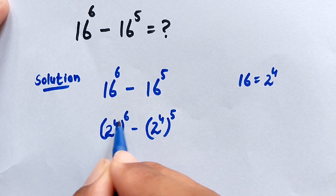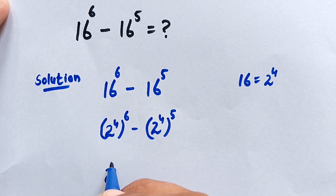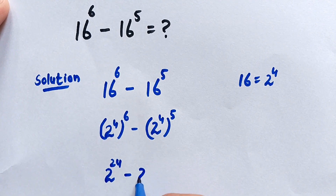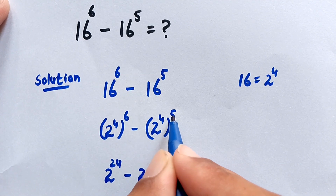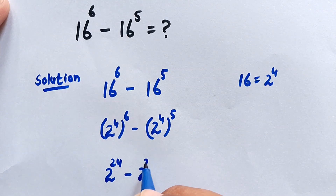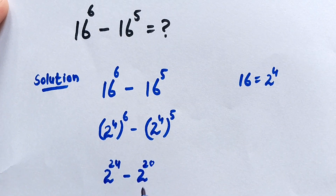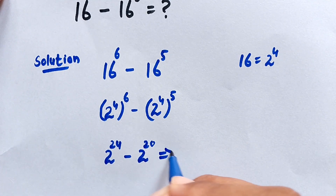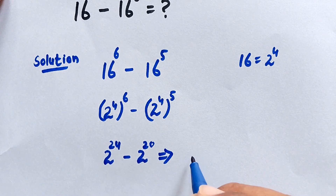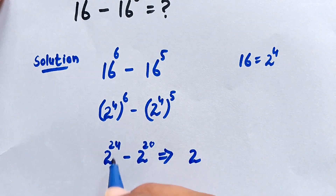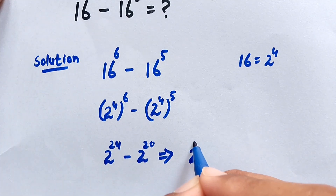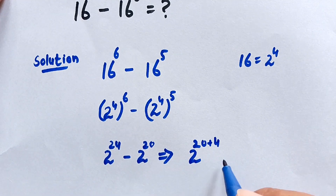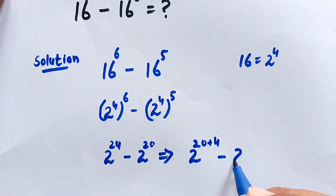In the next step, 2 to the power of 4 times 6 is equal to 24, minus 2 to the power of 4 times 5 is equal to 20. So we have 2 to the power of 24 minus 2 to the power of 20.